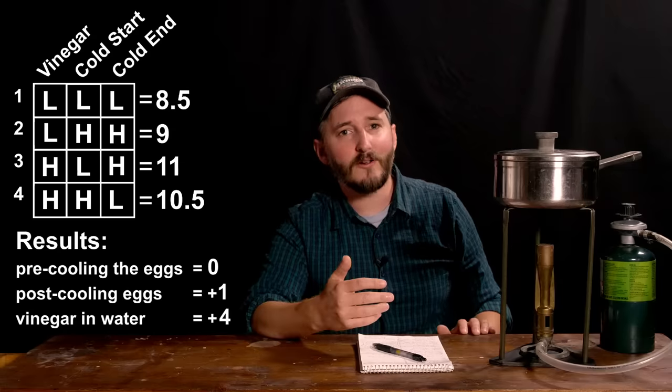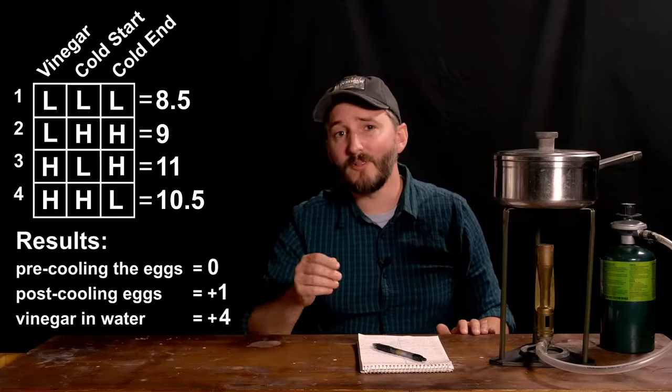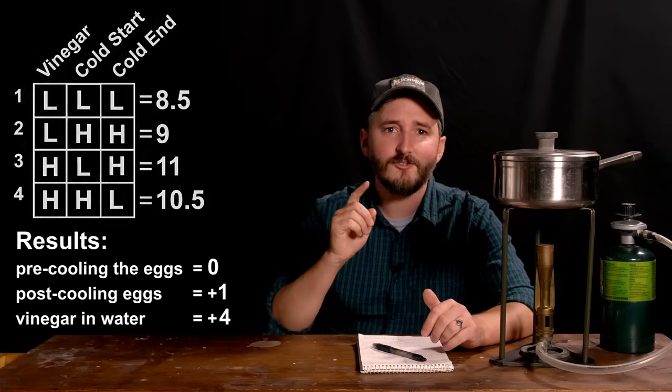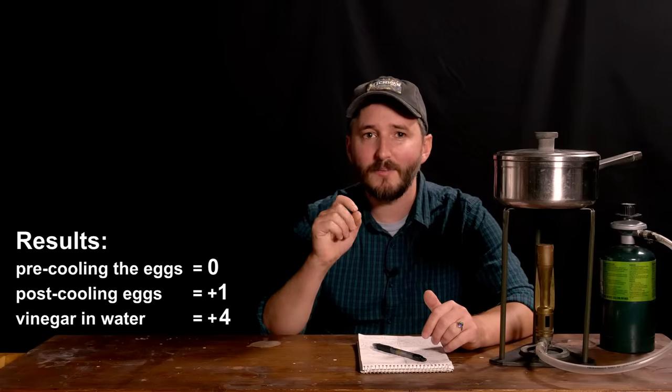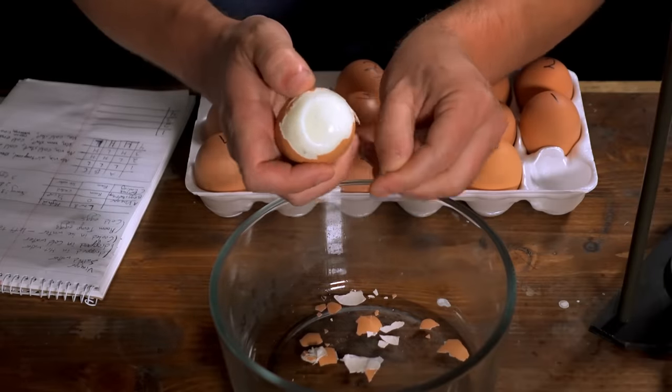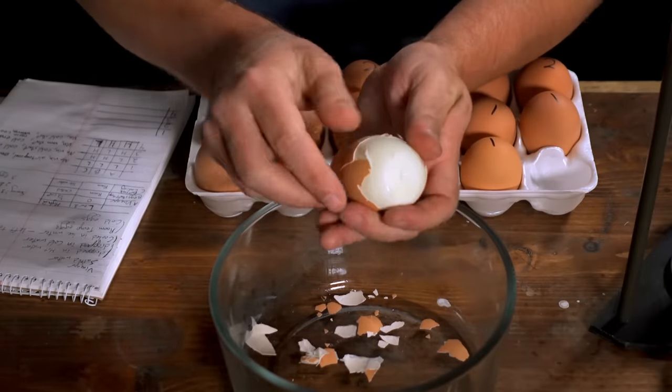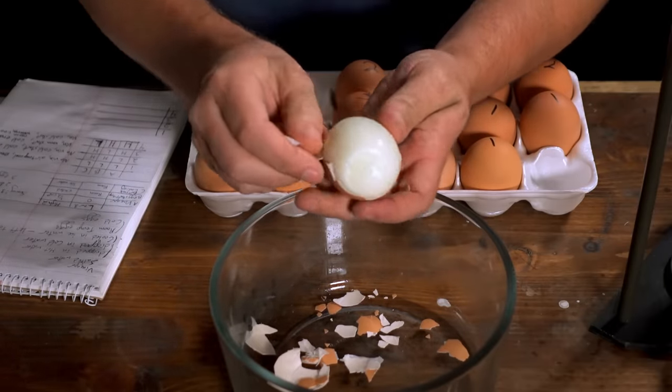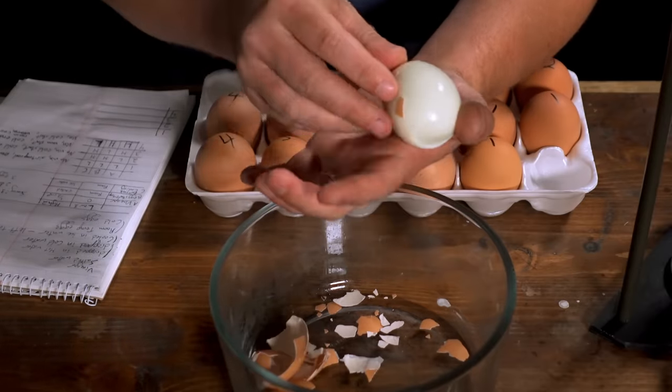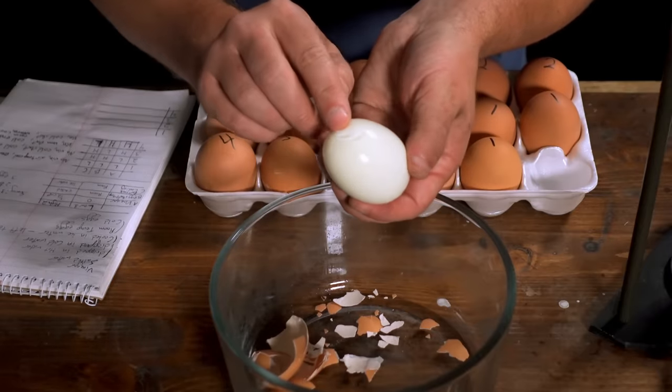As for dropping in ice water it might help but only barely and in fact it's very possible that this value of one is just due to a single egg being slightly easier to peel than average. To be more accurate we could use 10 or 20 eggs for each test but these results are good enough to say with confidence that vinegar makes a difference and the other two things are at most comparatively insignificant.